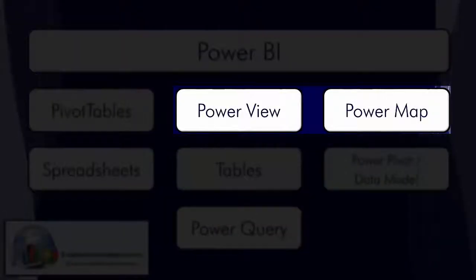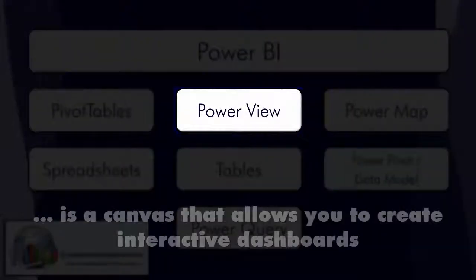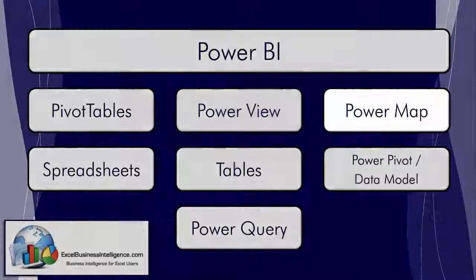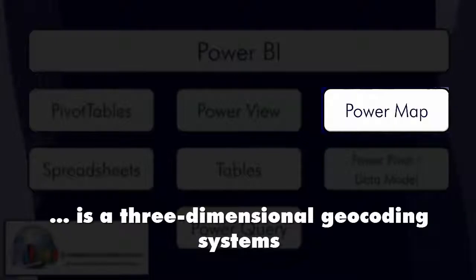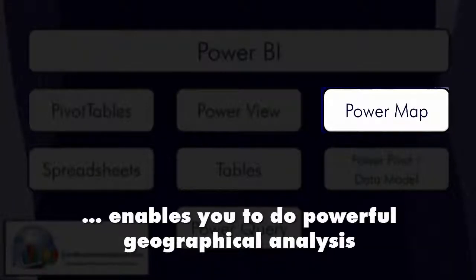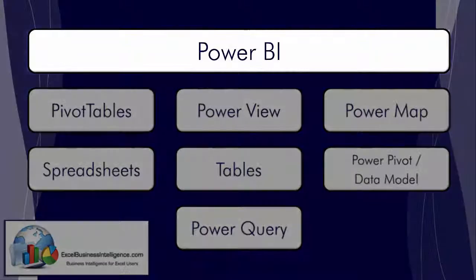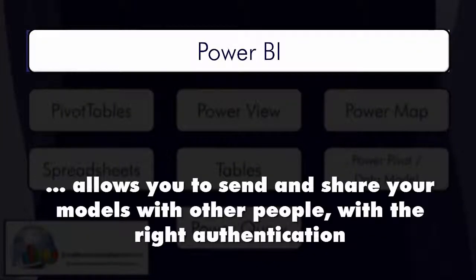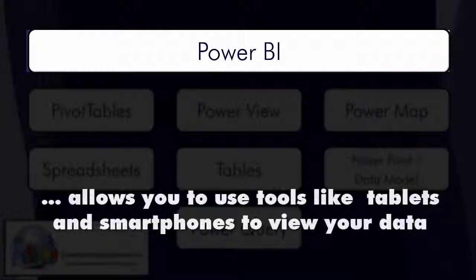Power View and Power Map are at the presentation level. Power View is a canvas that allows us to create interactive dashboards — we'll be looking at examples of this. Power Map is a three-dimensional geocoding system that allows us to do geographical analysis, which is very powerful. At the top is the Power BI infrastructure, which allows us to share our models with the right authorization within the organization and use tools such as tablets to view our data.